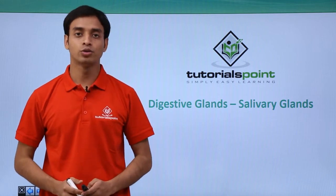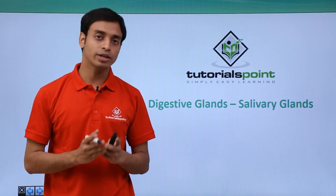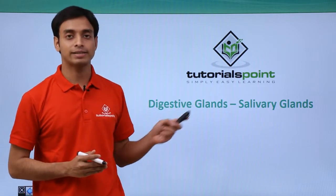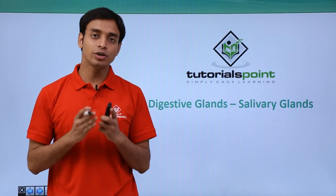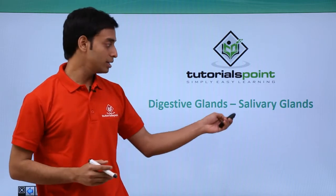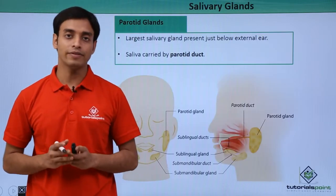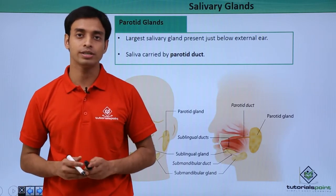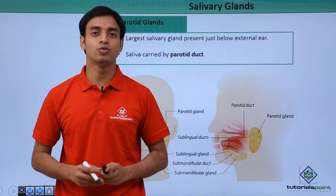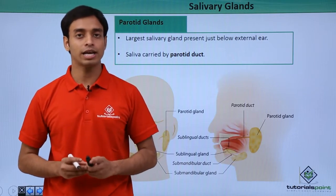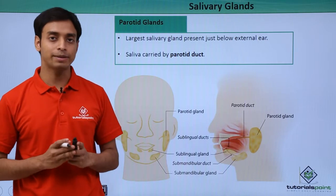Hello everyone, welcome to Tutorials Point. In this video we will be talking about different digestive glands that take part in the digestion and absorption process. Let us start a discussion with the salivary glands. There are three pairs of salivary glands present in human beings, and these three pairs of glands secrete about 1 to 1.5 liters of saliva per day.